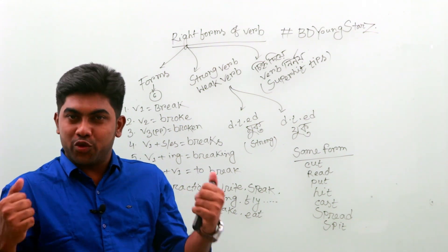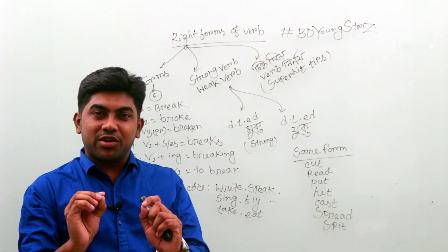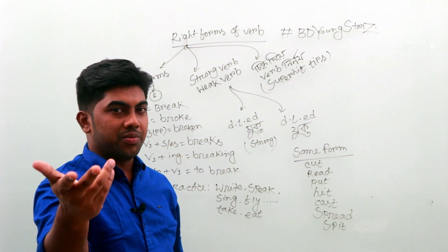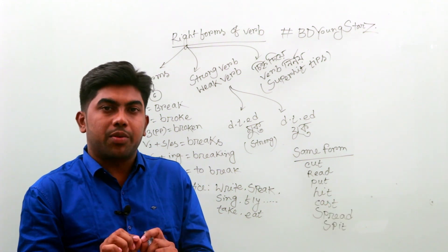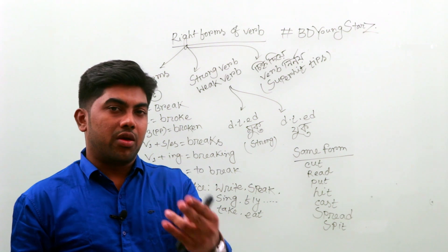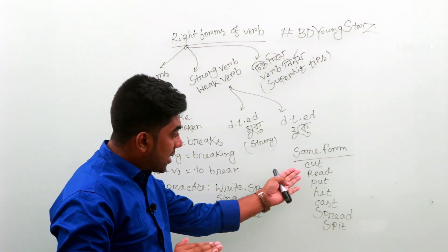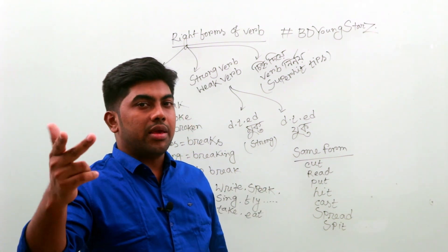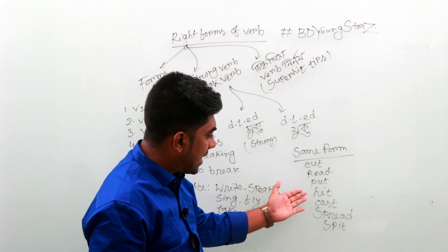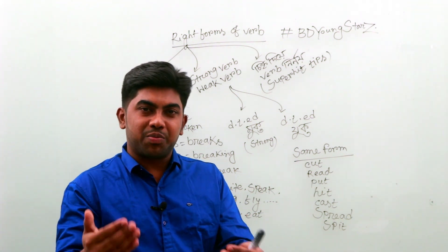A weak verb is one where the present, past, and past participle are all in the same form — they do not change. For example: cut, cut, cut; read, read, read; put, put, put; hit, hit, hit; cast, cast, cast; spread, spread, spread; spit, spit, spit. All these verbs have the same form for present, past, and past participle.